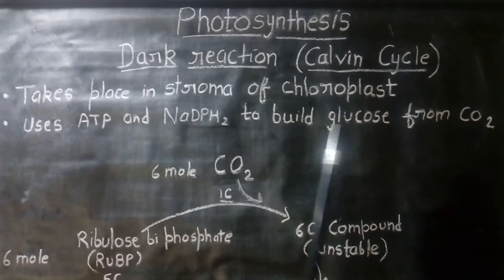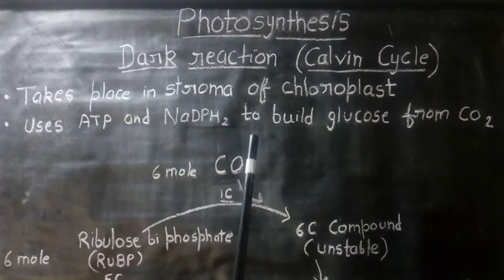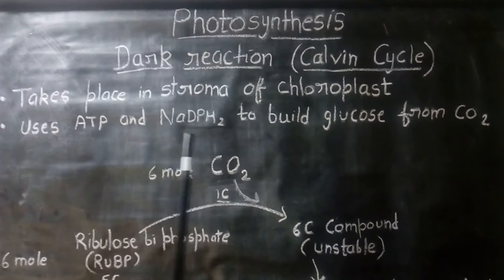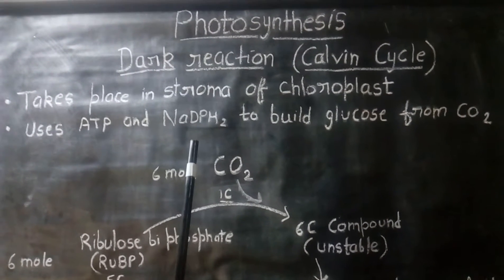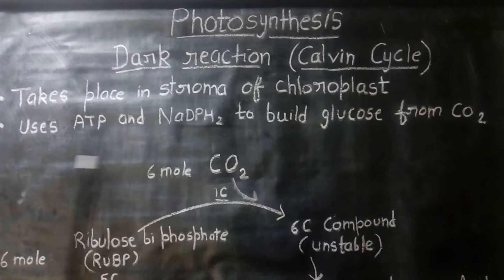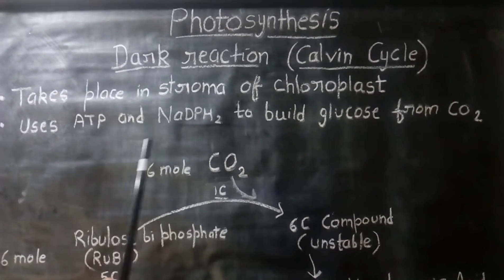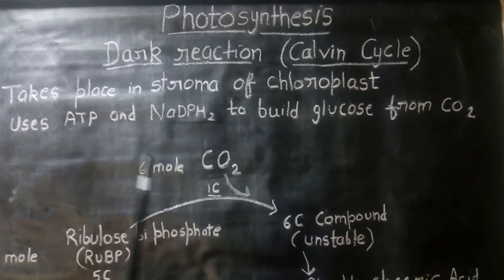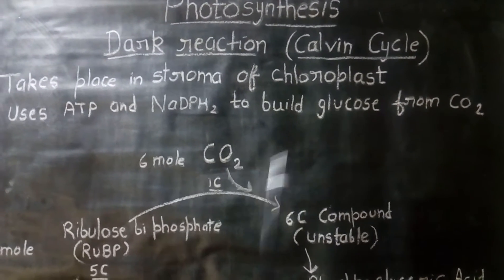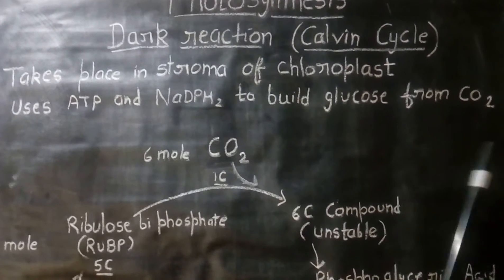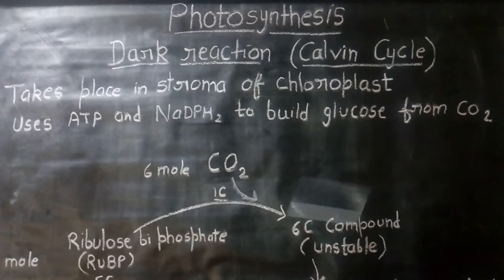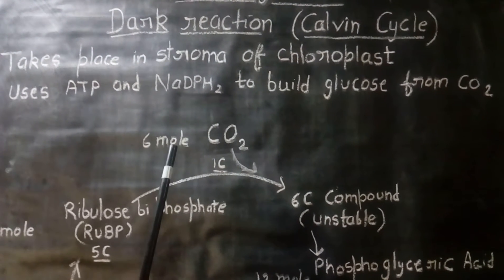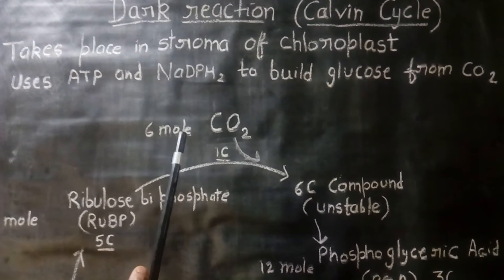As we know, the photosynthesis reaction takes place in two parts: light reaction and dark reaction. Light reaction takes place in grana and dark reaction takes place in stroma of chloroplast. It uses ATP and NADPH2 to build up glucose molecules from carbon dioxide. The ATP and NADPH2 are formed earlier in the light reaction.